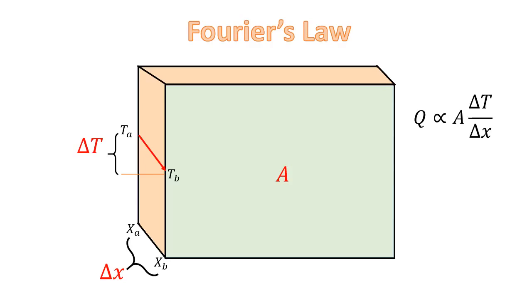If the material of the wall is homogeneous and has a thermal conductivity k, which is the constant of proportionality, then the formula is the following.